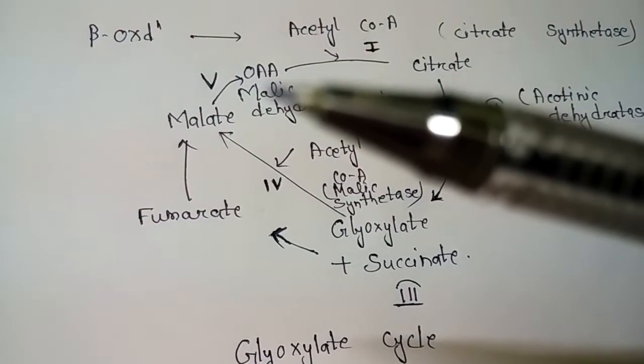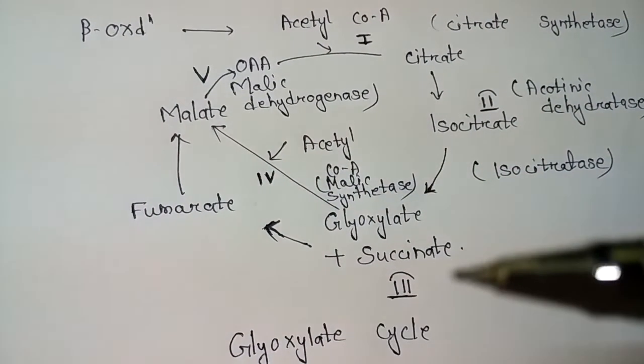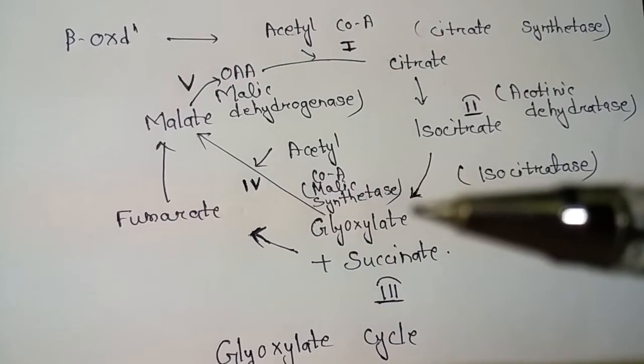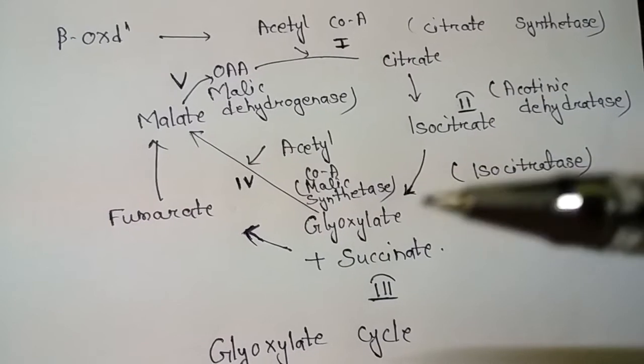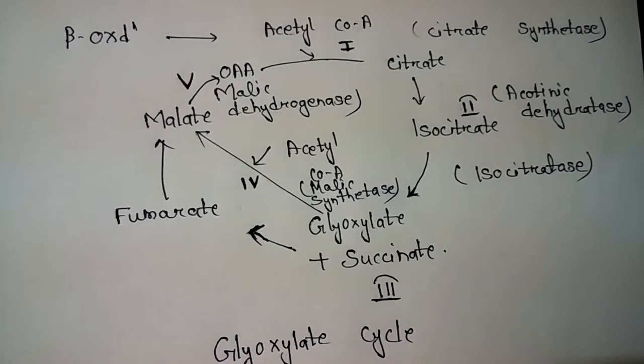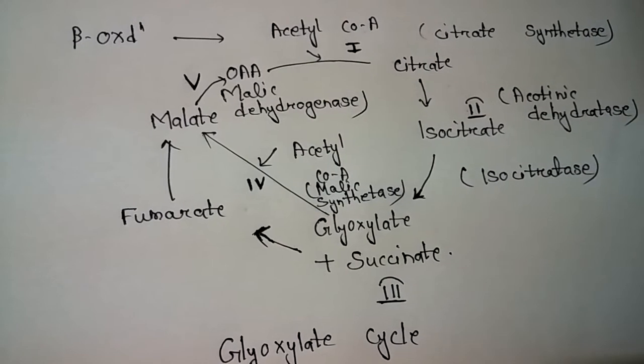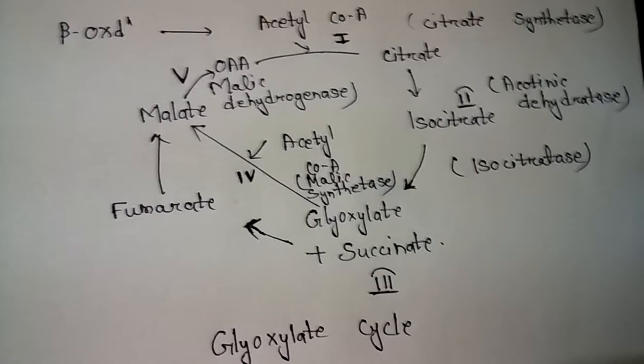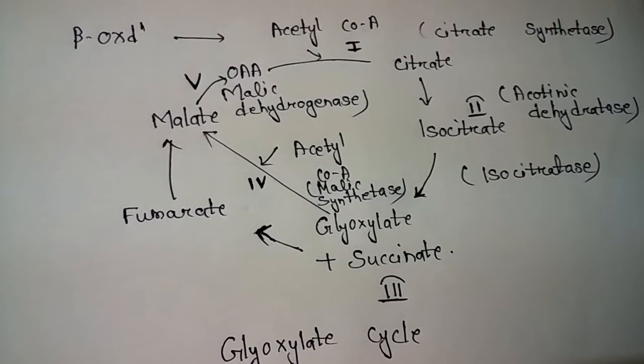The glyoxylate cycle is found only in plants and microorganisms. It is generally absent in animals. Why? Because animals lack two enzymes: isocitrate lyase and malate synthetase.